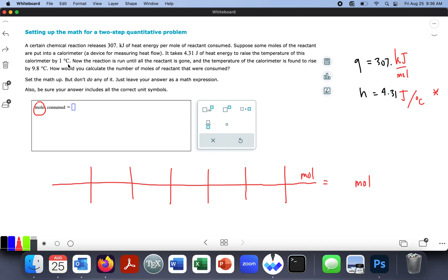Now the reaction is run until the reactant is gone. All right, still confused. And the temperature of the calorimeter is found to raise. Okay. So it looks like a change in temperature is going to be 9.8 degrees Celsius. So degrees Celsius. Let's go back to black. 9.8 equals, and this is a change in temperature.